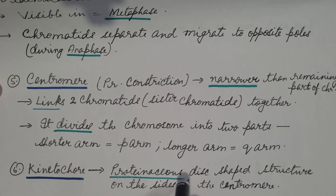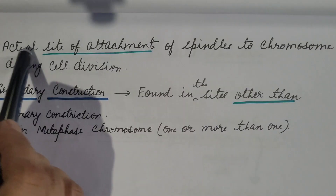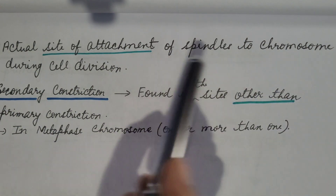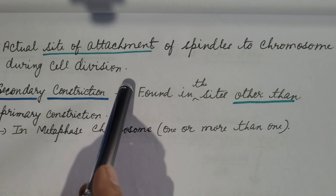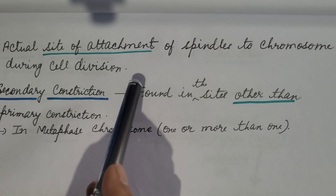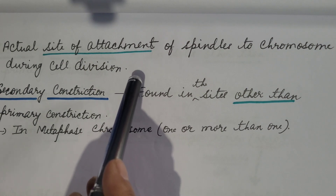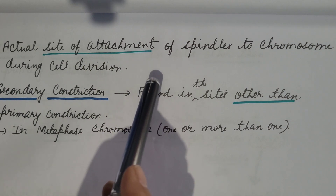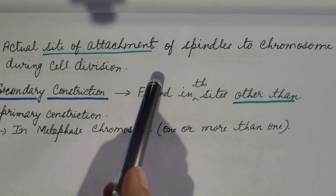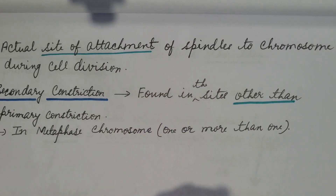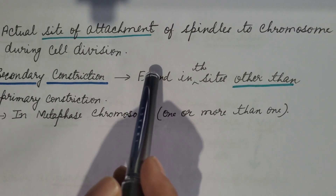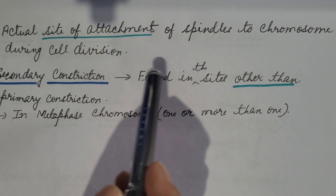Sixth is the kinetochore — proteinaceous disc-shaped structures on the sides of the centromere. These are the actual sites of attachment of spindle fibers to the chromosome during cell division. When the spindle shortens, the two sister chromatids, or the two homologous chromosomes during meiosis, are pulled apart and move toward the opposite poles during anaphase.